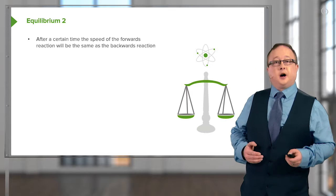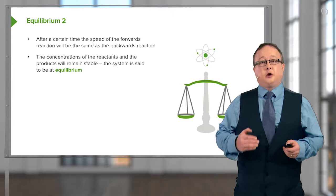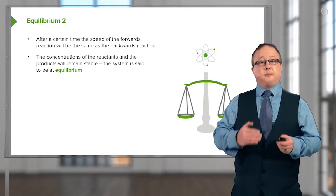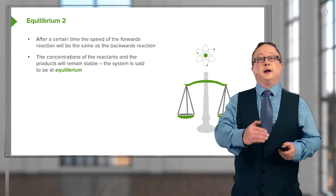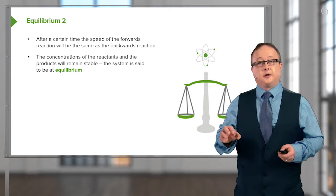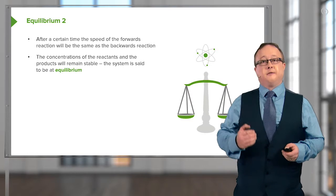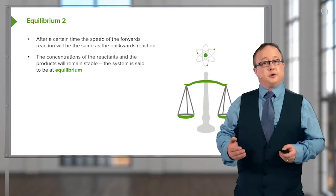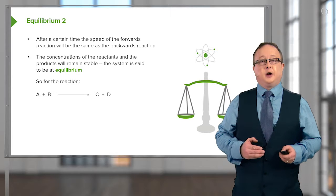After a certain time, the speed of the forward reaction will be the same as the backward reaction, and the concentrations of the reactants and the products will remain stable, or will remain steady-state. That is to say, the concentration of either the products nor the reactants will then change, unless there is influence externally by varying, for example, temperature or pressure. The system is said to be, therefore, at equilibrium.